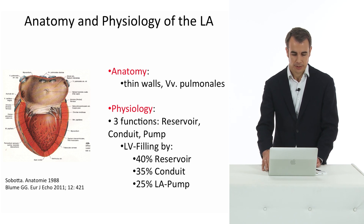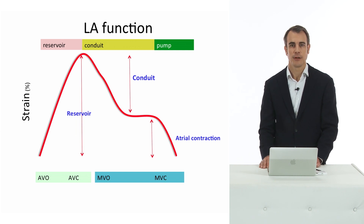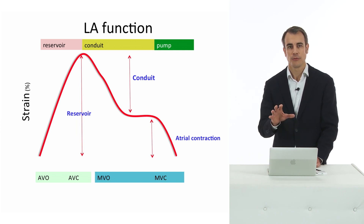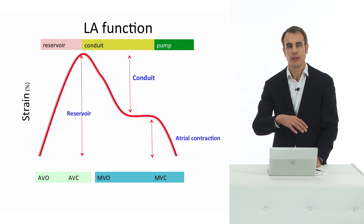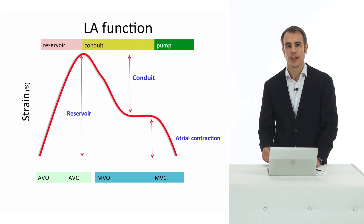Schematically you can see LA function in this curve. You can see in the systole the filling and then the opening of the mitral valve, the conduit function, and then you can see atrial contraction.